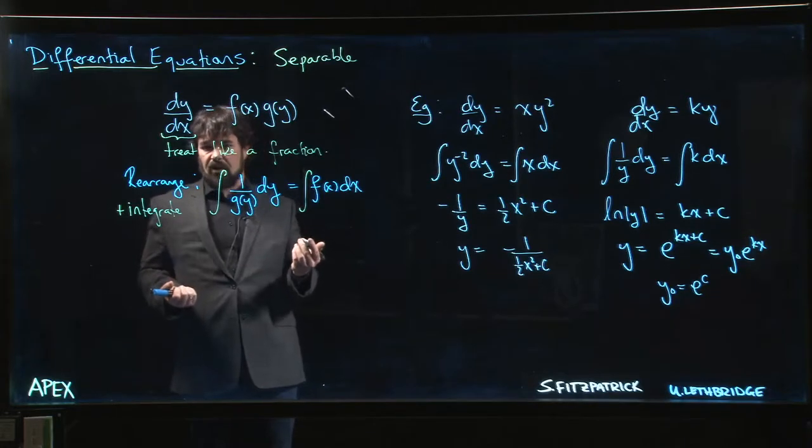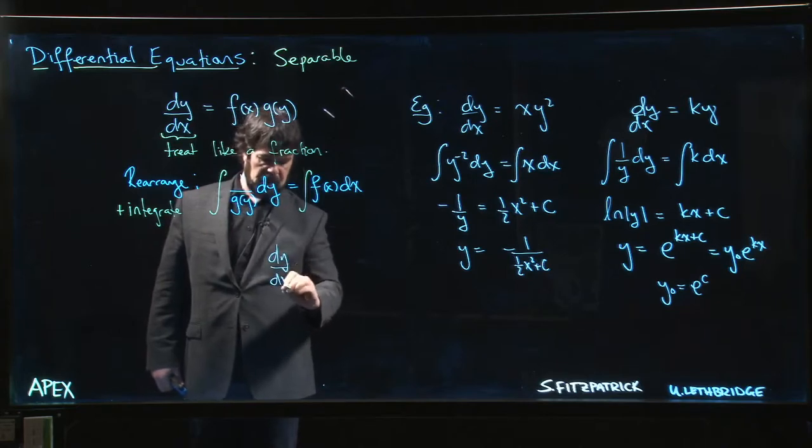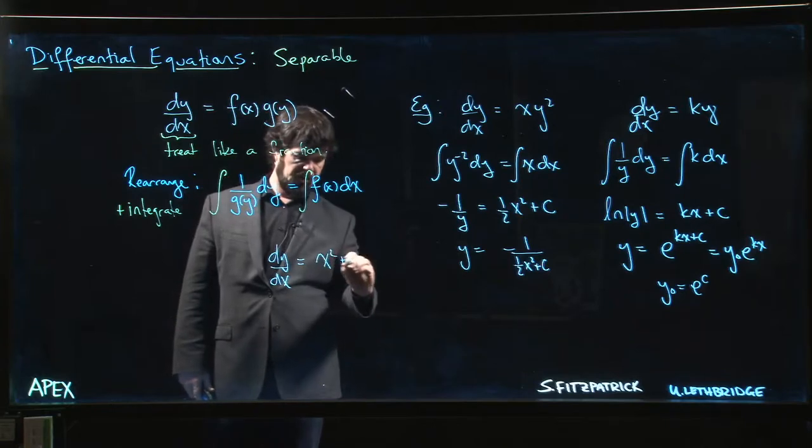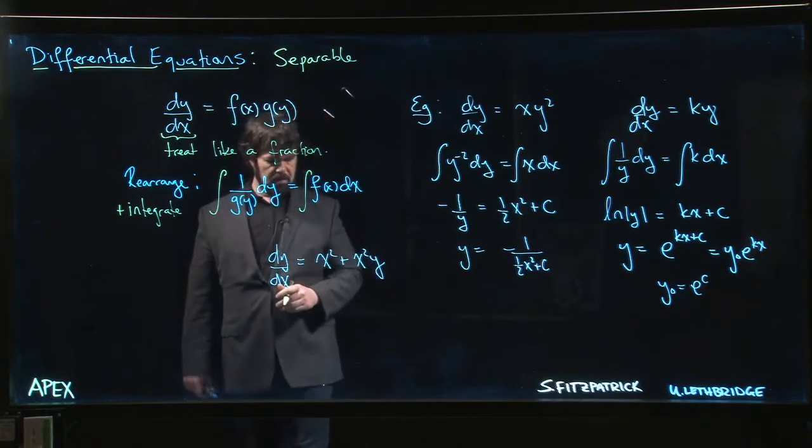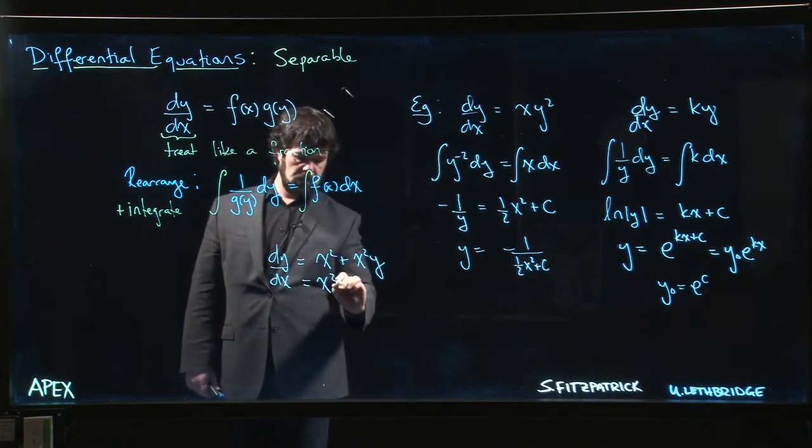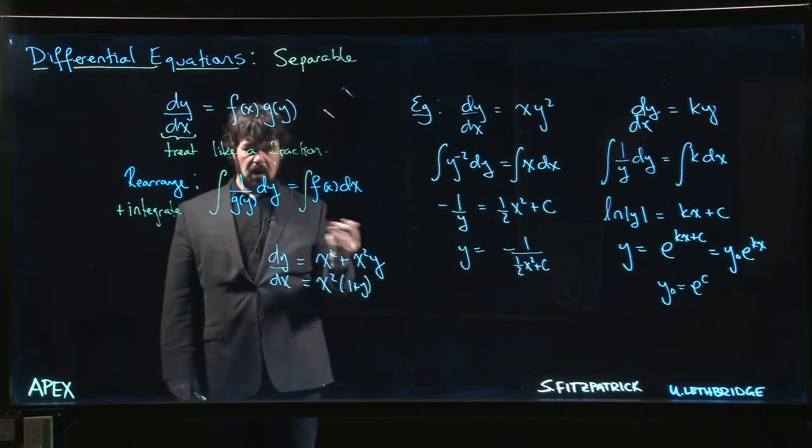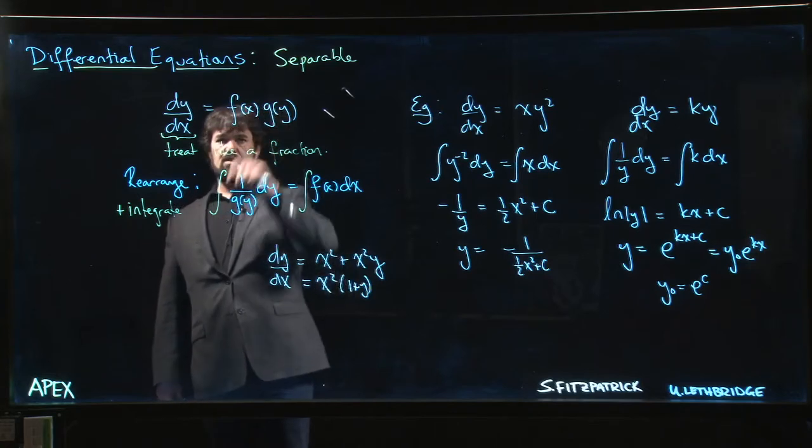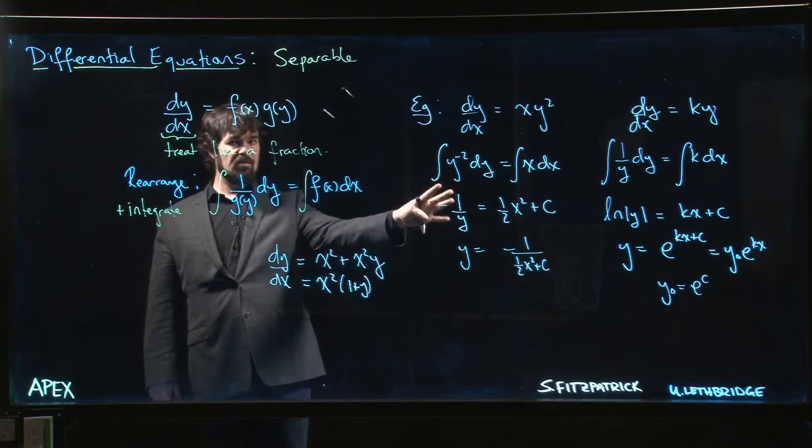Unless there's some factoring or something you can do. So maybe we have something like dy/dx is x² plus x² times y, and you think, well maybe that's not actually separable. But then you realize you can factor out the x², and you can get it into that form. So occasionally you want to be on the lookout for that sort of thing, but typically you're looking for this product pattern and then you follow this general strategy.